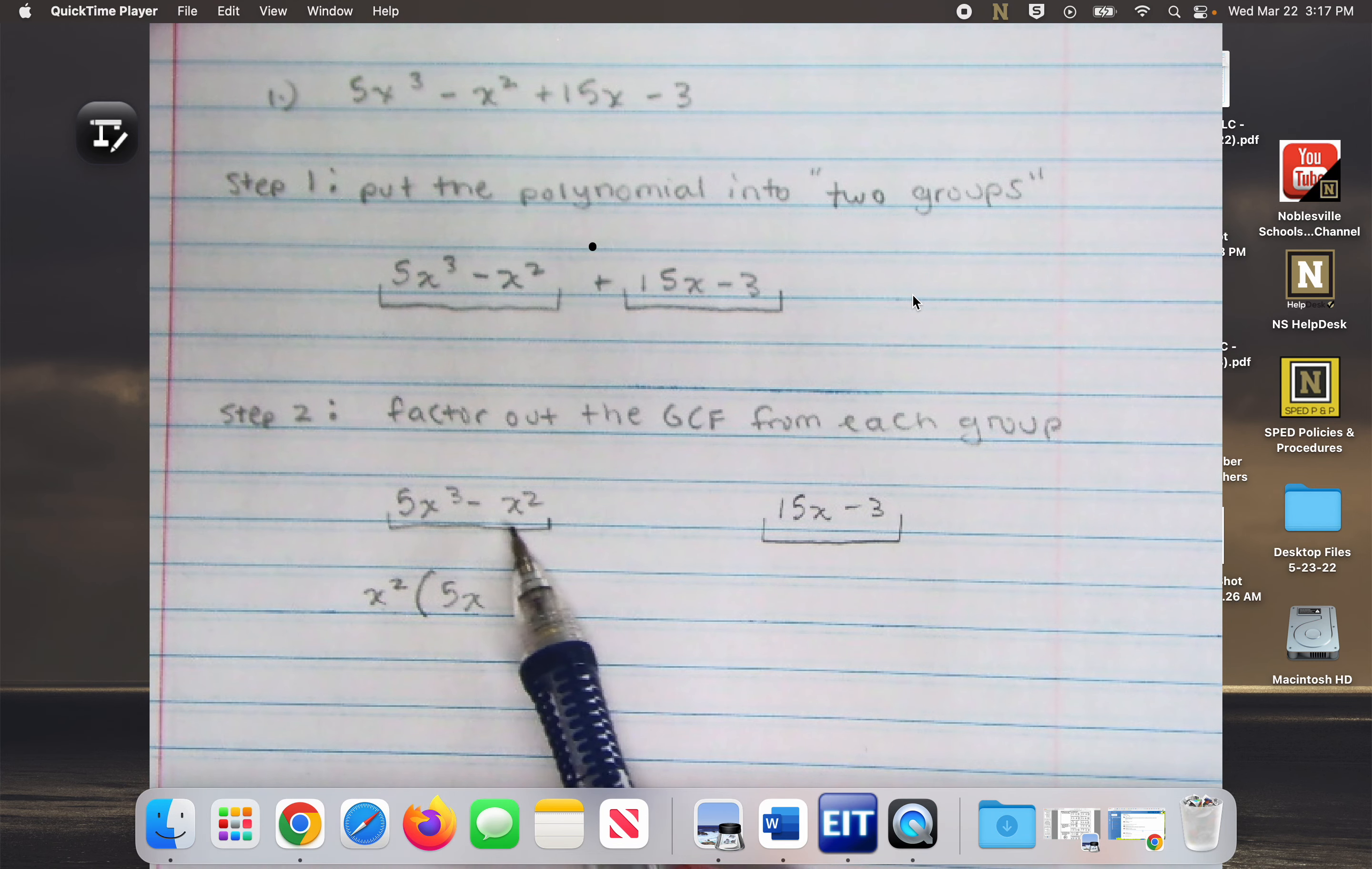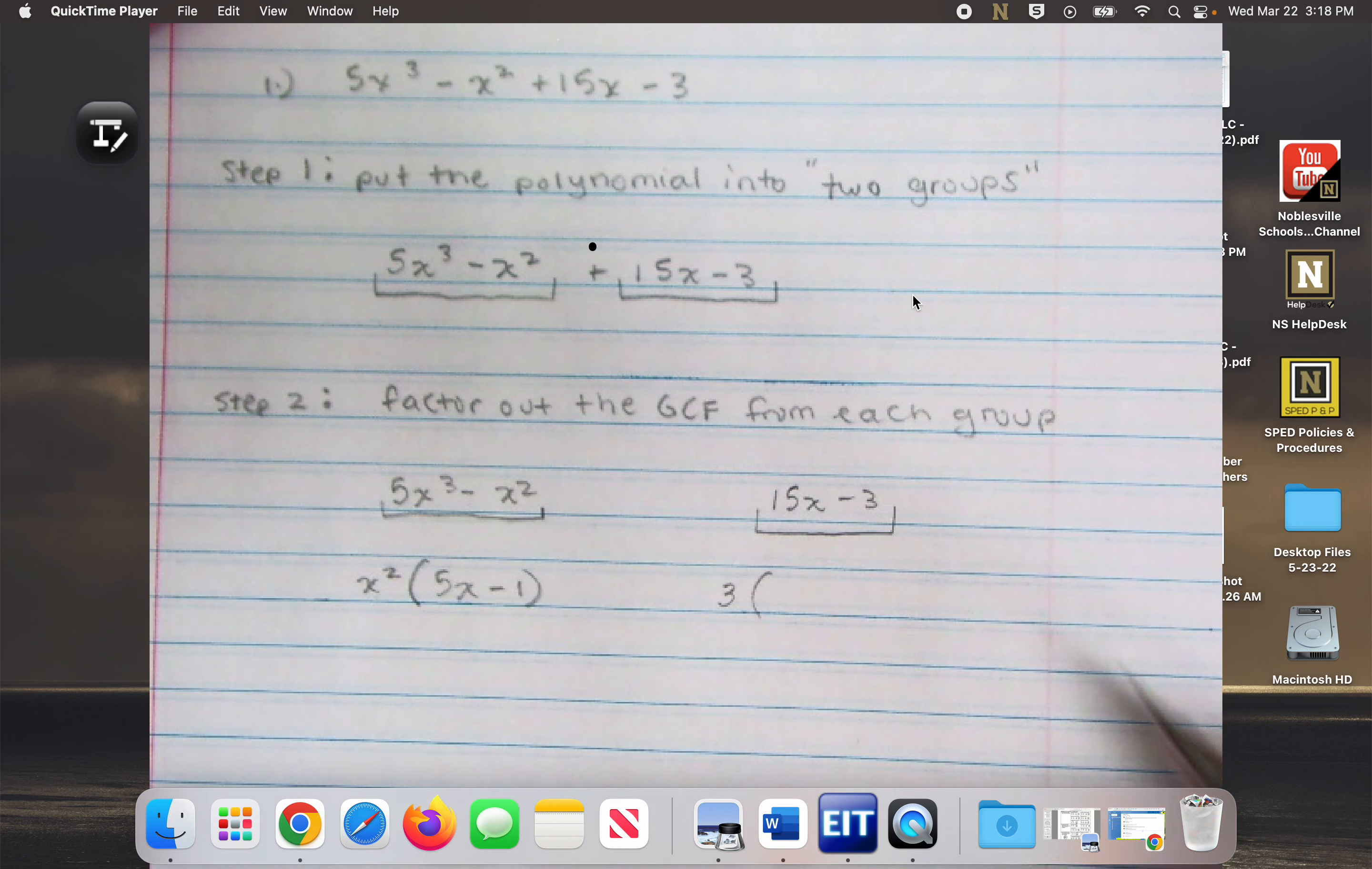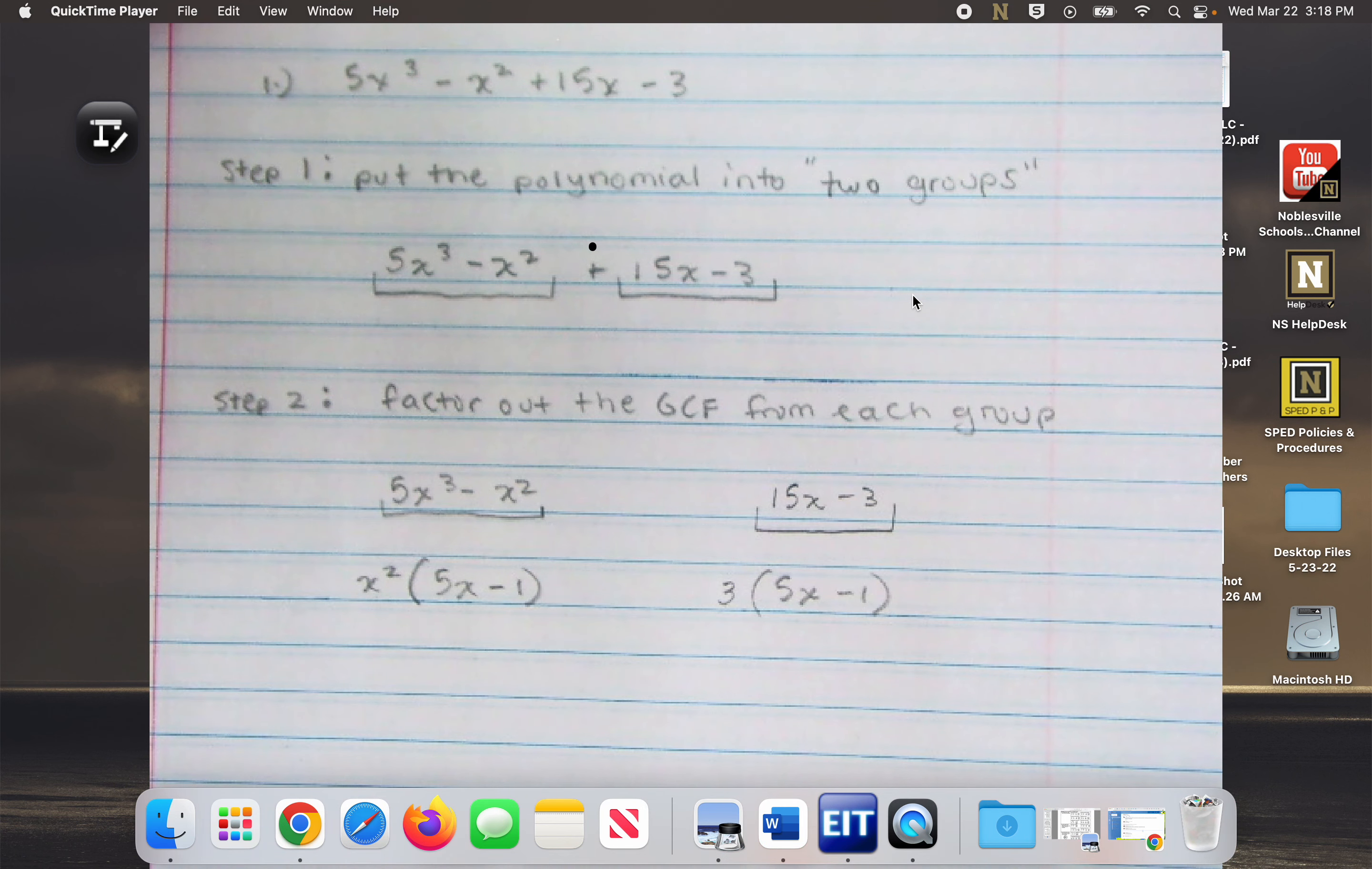x squared times what would give me negative x squared? Minus one. And then my greatest common factor for the second group? Three. So I'm going to have three times, and then I'm going to have three times what gives me 15x? That's going to be 5x. And three times what gives me negative three? Minus one.